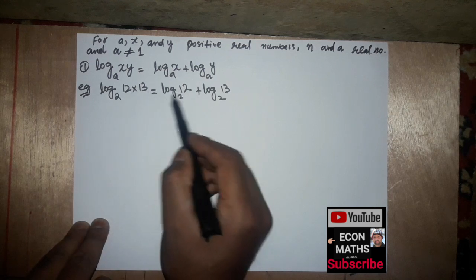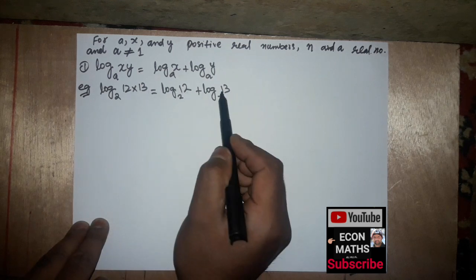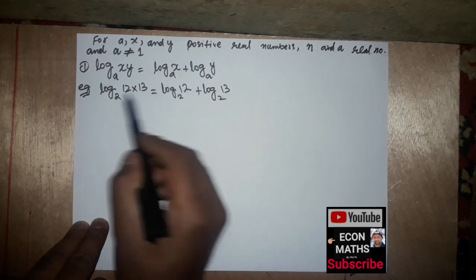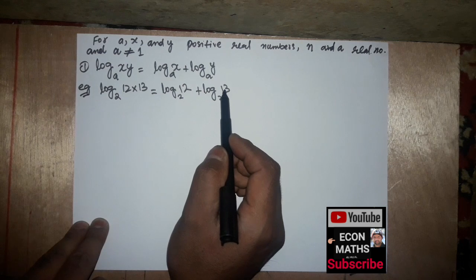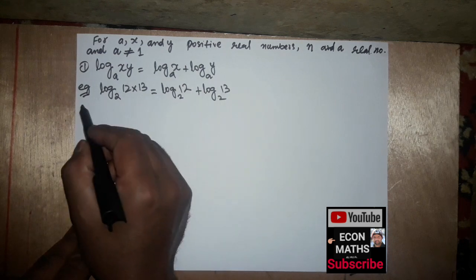For example, log of 12 times 13 equals log of 12 plus log of 13. So multiplication becomes addition in logarithms.